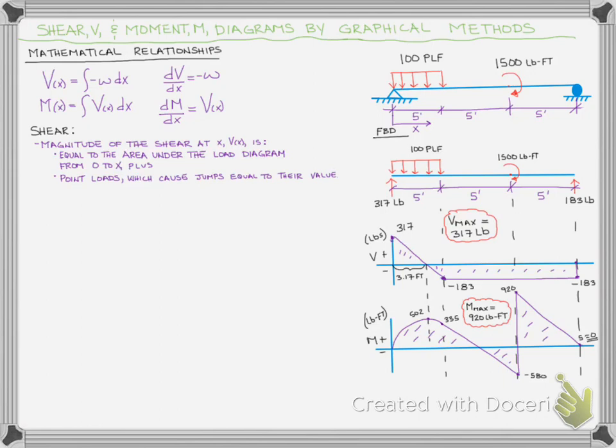Now, if you have a point load like our 317 pounds or 183 pounds, that doesn't really have an area under it. But what those do is cause a jump just equal to their magnitude on the shear diagram. So you can just sum up all the areas and all of the jumps from zero to X, and that gives you the magnitude of shear at that point.